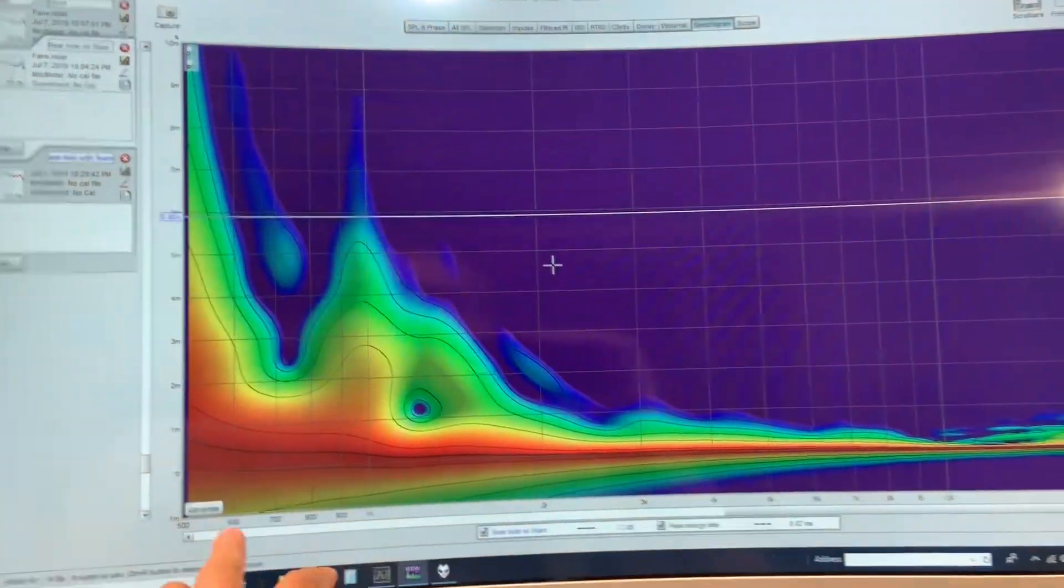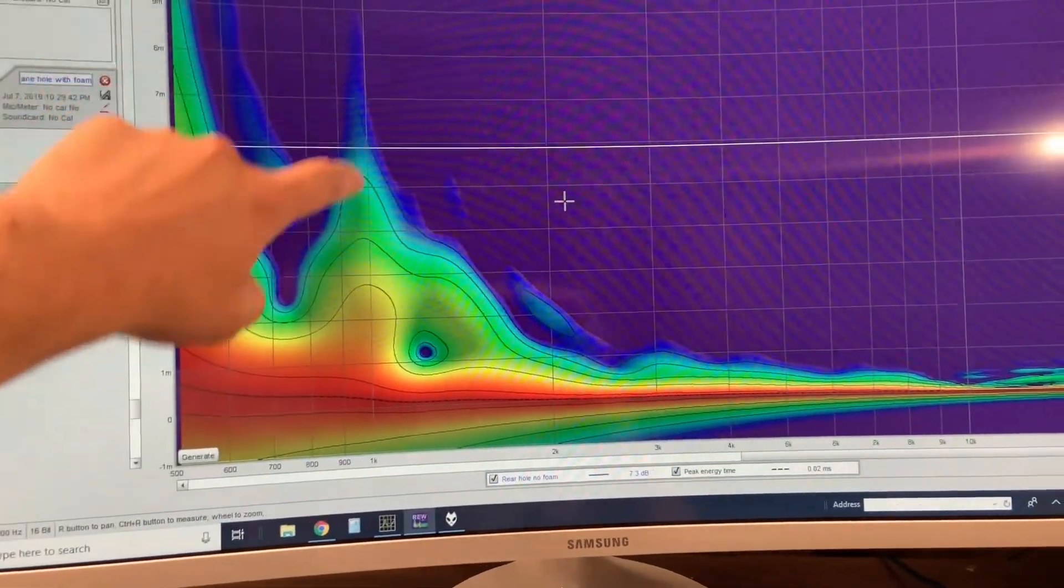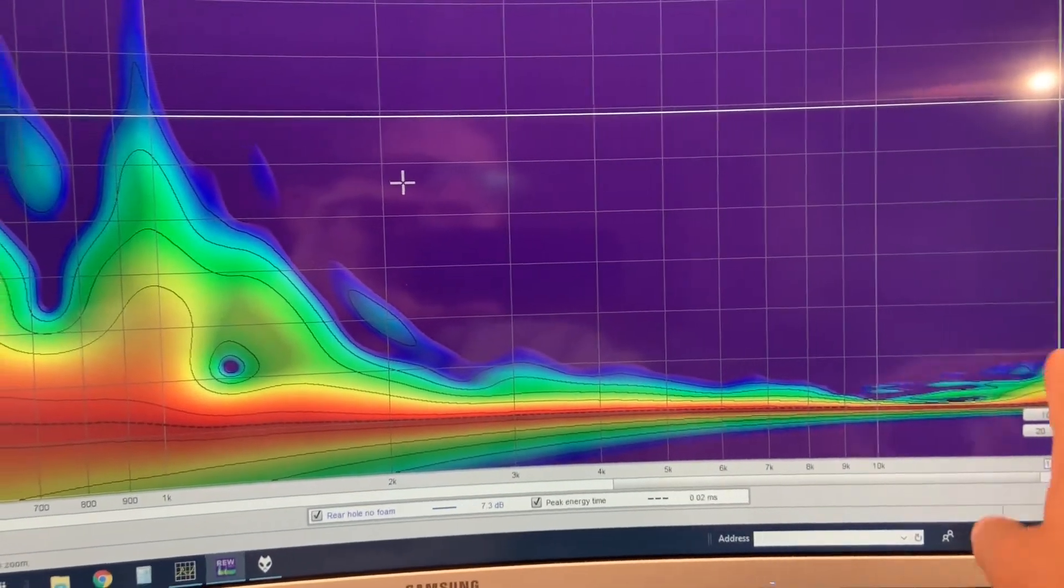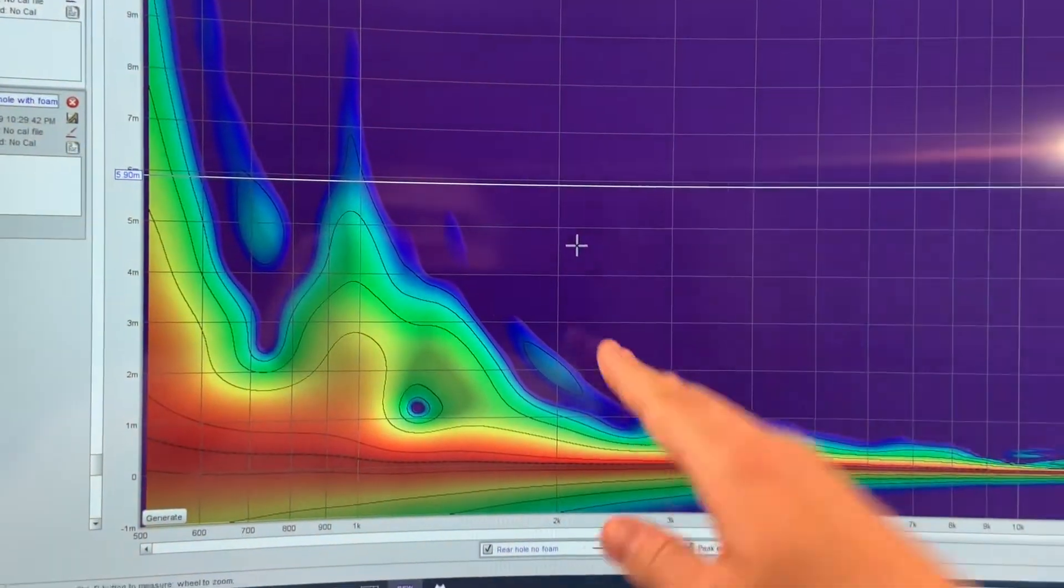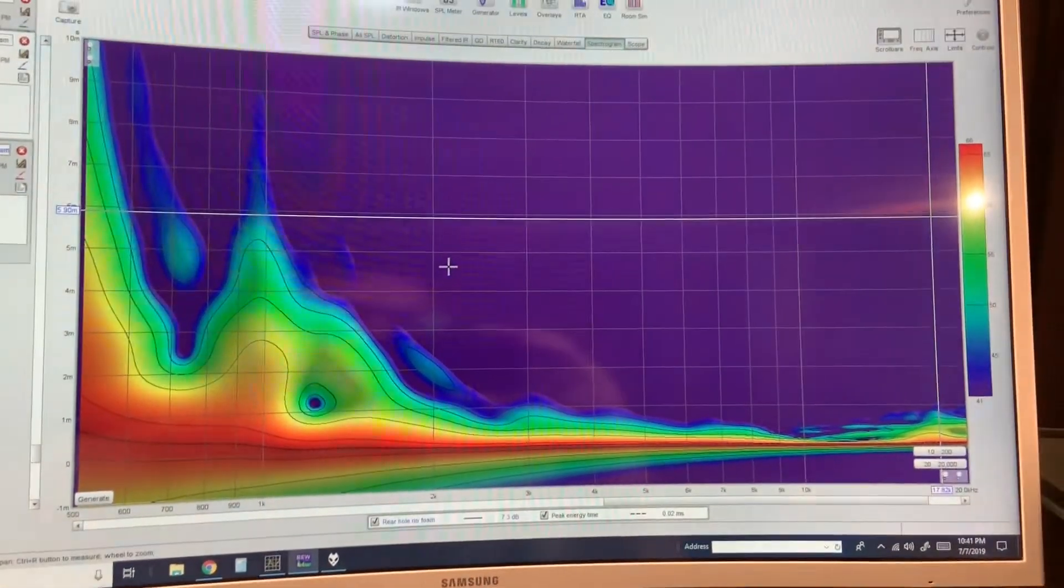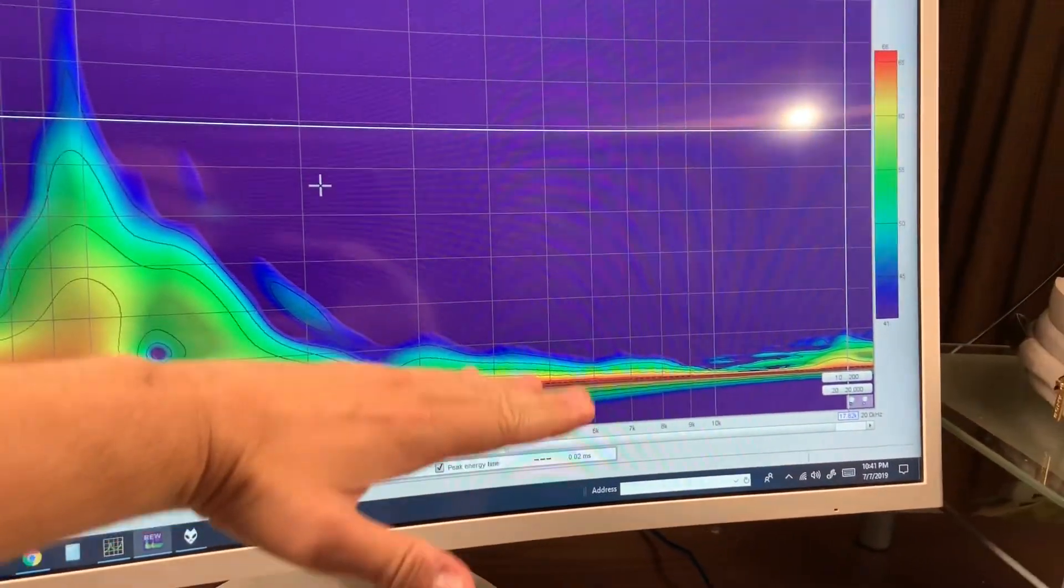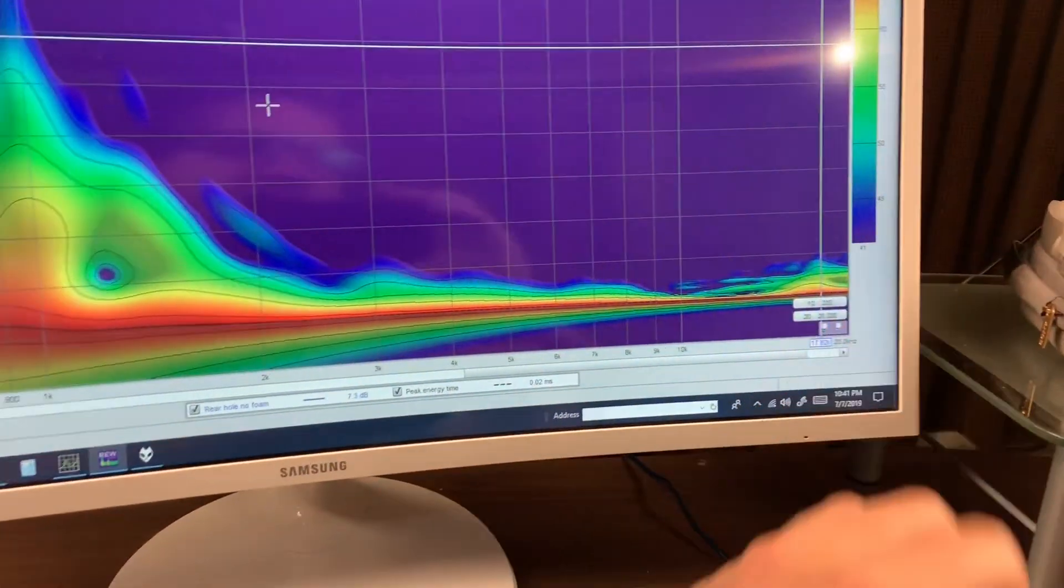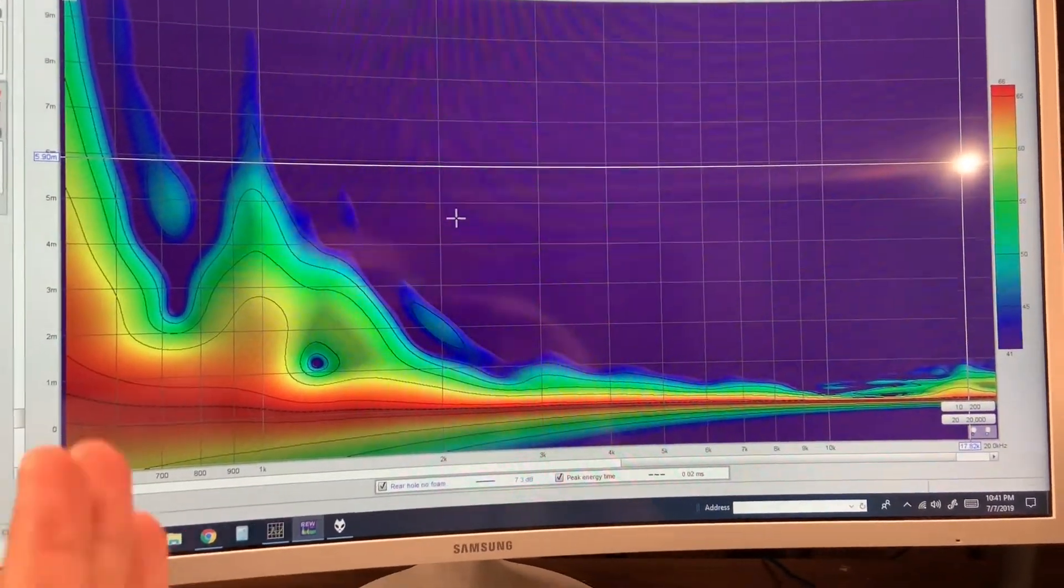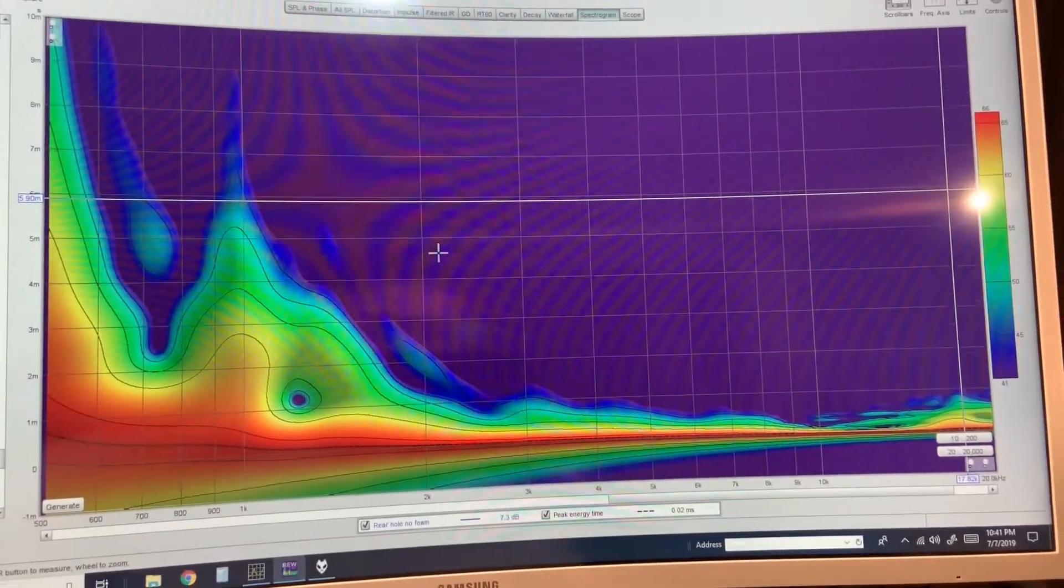I've changed the spectrogram to show logarithmic in the x-axis or the horizontal. You can see here the two impedance peaks as resonances and then over here you can see the breakup that's occurring. In the vertical axis is time and the horizontal is frequency. So we're actually looking at the time domain aspect of the compression driver, the initial burst of the sound and then how quickly the driver decays at the specific frequencies.